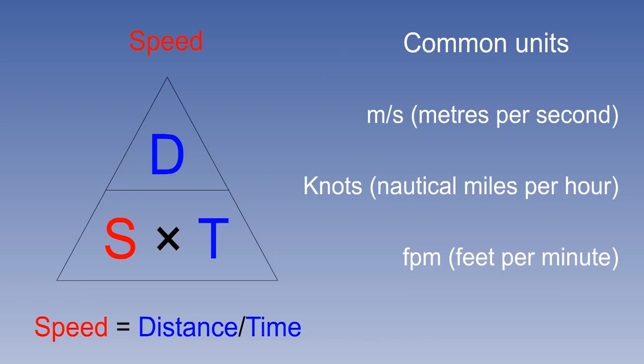The SI unit of speed is metres per second, which is used in aviation in some countries. In the UK and many other countries, horizontal speed is measured in knots, which is nautical miles per hour, and vertical speed in feet per minute. In aviation, it is important to be able to convert between these speeds roughly in your head.